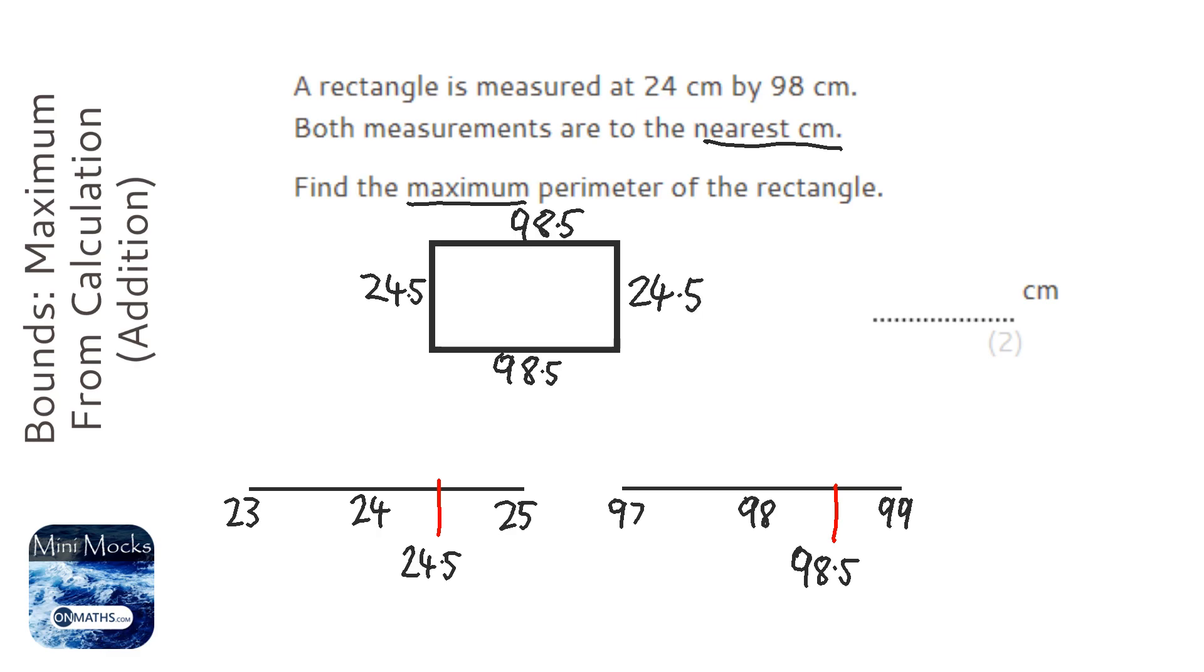So we look at my calculator and I'm going to add up 24.5 plus 98.5 plus 24.5 plus 98.5. If I was smart I could have just added 24.5 and 98.5 and doubled it and I get the answer of 246.